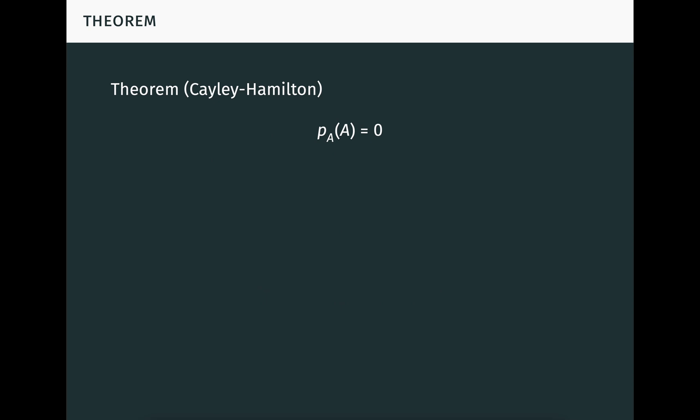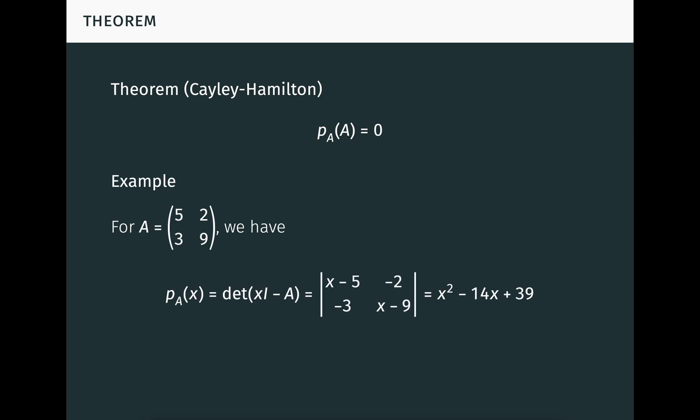The Cayley-Hamilton theorem says that a square matrix satisfies its own characteristic equation. That is, when we substitute the matrix A for the indeterminate x in the characteristic polynomial of A, we get the zero matrix. For example, if A is the 2 by 2 matrix seen here, the characteristic polynomial is x squared minus 14x plus 39. The theorem says that A squared minus 14A plus 39I equals the zero matrix, which you can verify by direct computation.